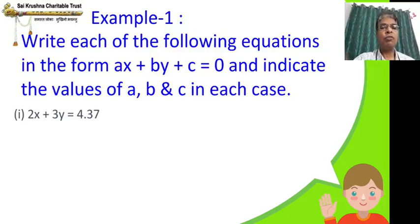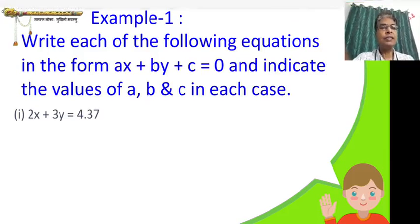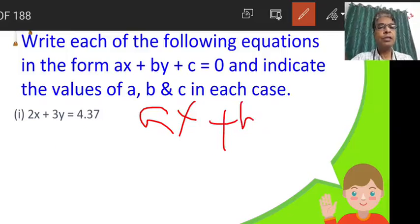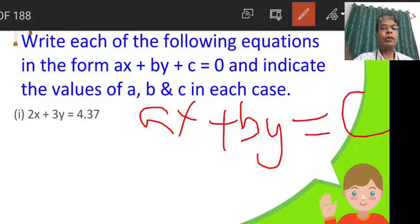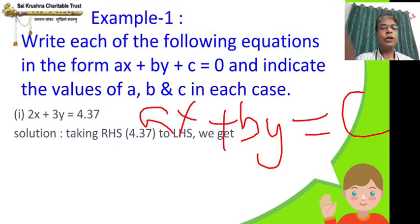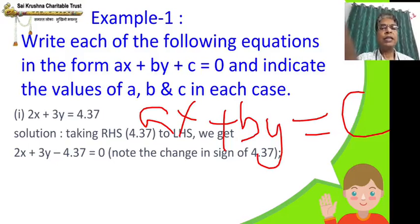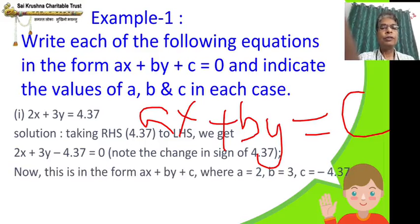First one: 2x + 3y = 4.37. I will explain this in detail; next ones I am going to pause so you can try in your notebook and then check. So 2x + 3y is now given in the form ax + by = c. What we are going to do is take c from the RHS to the LHS and make the RHS zero. Taking 4.37 to the LHS, we get 2x + 3y − 4.37 = 0. Note the change in sign of 4.37.